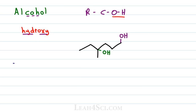A similar functional group is the thiol, which sounds like alcohol — it ends in OL — but the 'thi' portion represents the sulfur atom. If we take an alcohol and replace the oxygen with sulfur, we get a sulfur alcohol, or simply a thiol. Recall that sulfur sits under oxygen on the periodic table, so they have very similar binding ability.